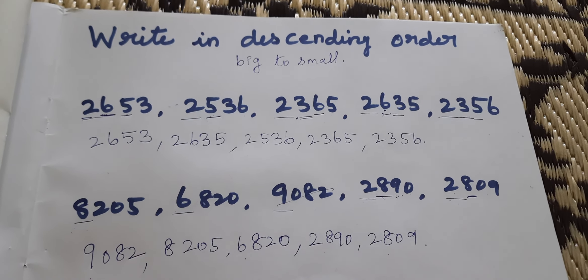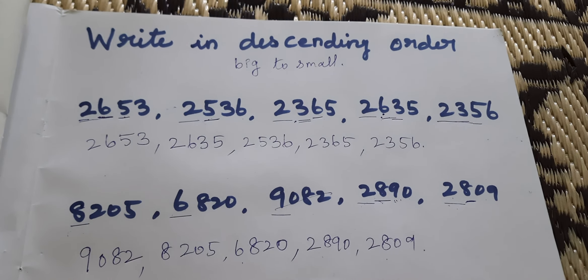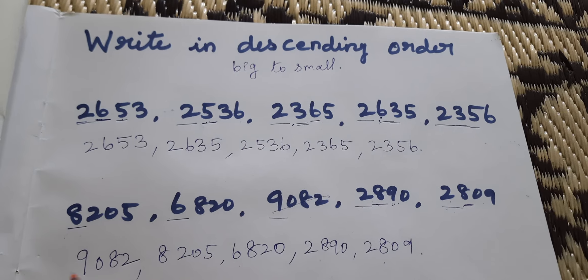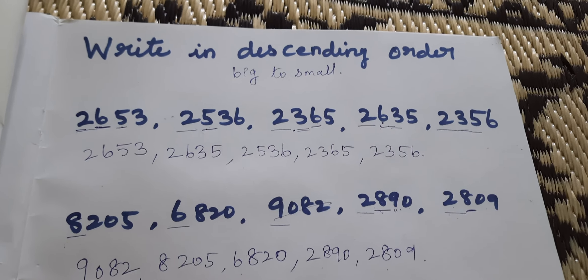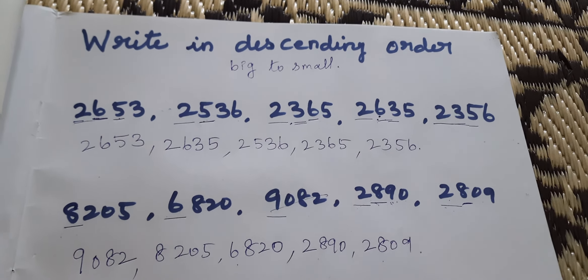Descending order means big to small. Ascending order means small to big. Okay? Thank you, kids!